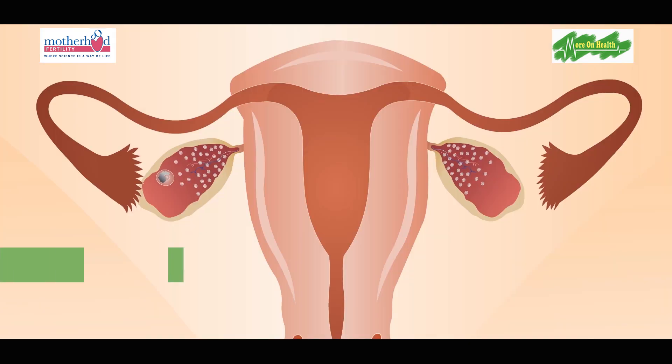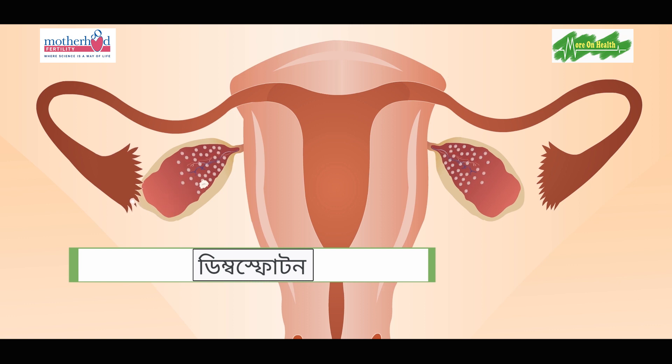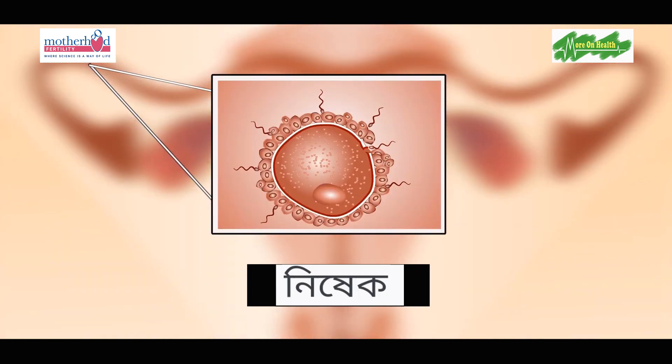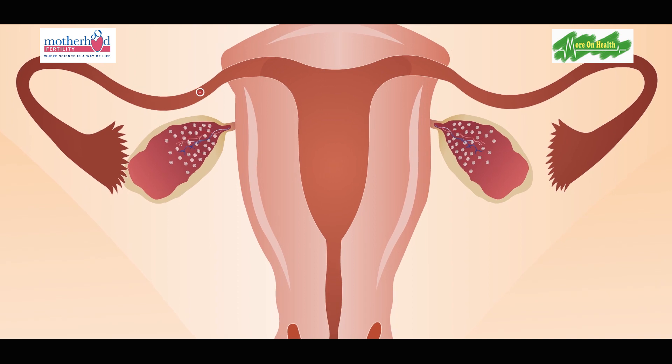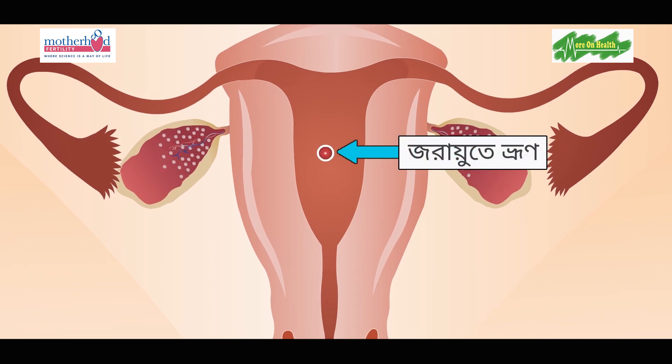What does the fallopian tube do? The fallopian tubes play a very important role — they help in the release and transport of eggs, and they have a very important role to play in conception.